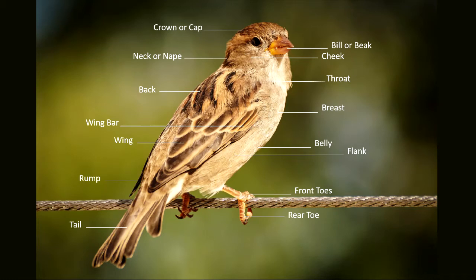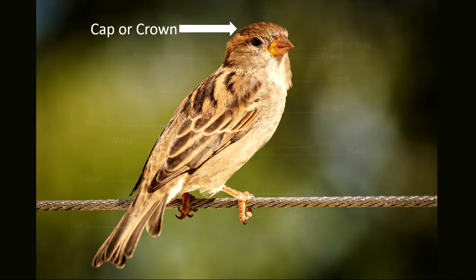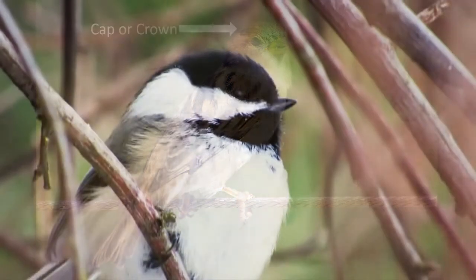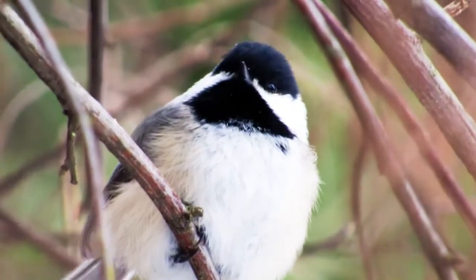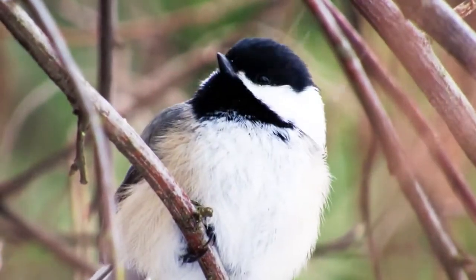Let's begin with an overview of basic bird anatomy. The cap, or crown, refers to the top of the head of a bird. A commonly known North American bird is the black-capped chickadee. Its name is derived from the fact that it has a black cap.